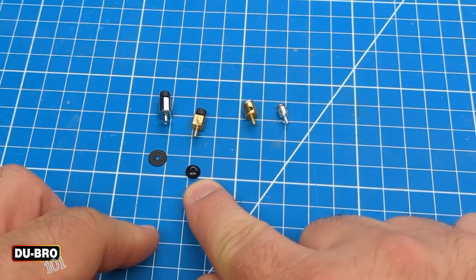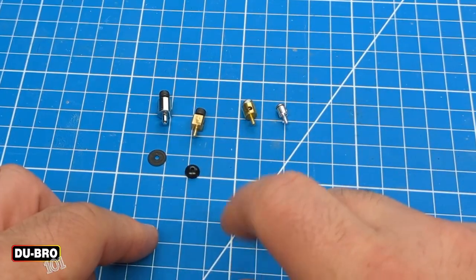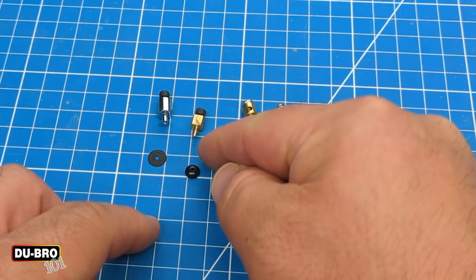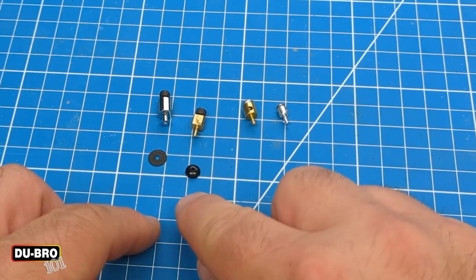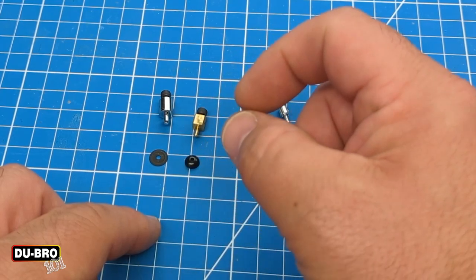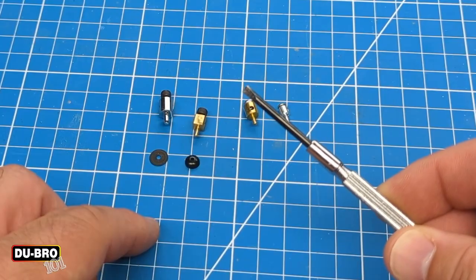The nylon style push nut can easily be pushed together just using your fingers. It does have a little indentation that makes use of a piece on the metal post and that is a little bit more difficult to take off. You do have to pry using some sort of flat blade screwdriver.